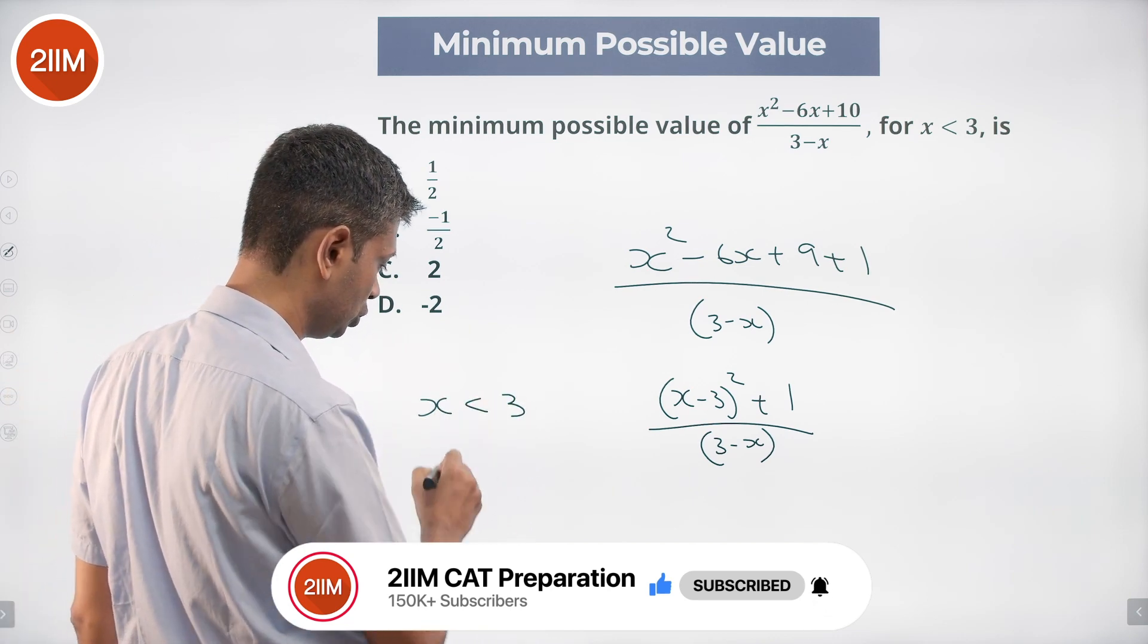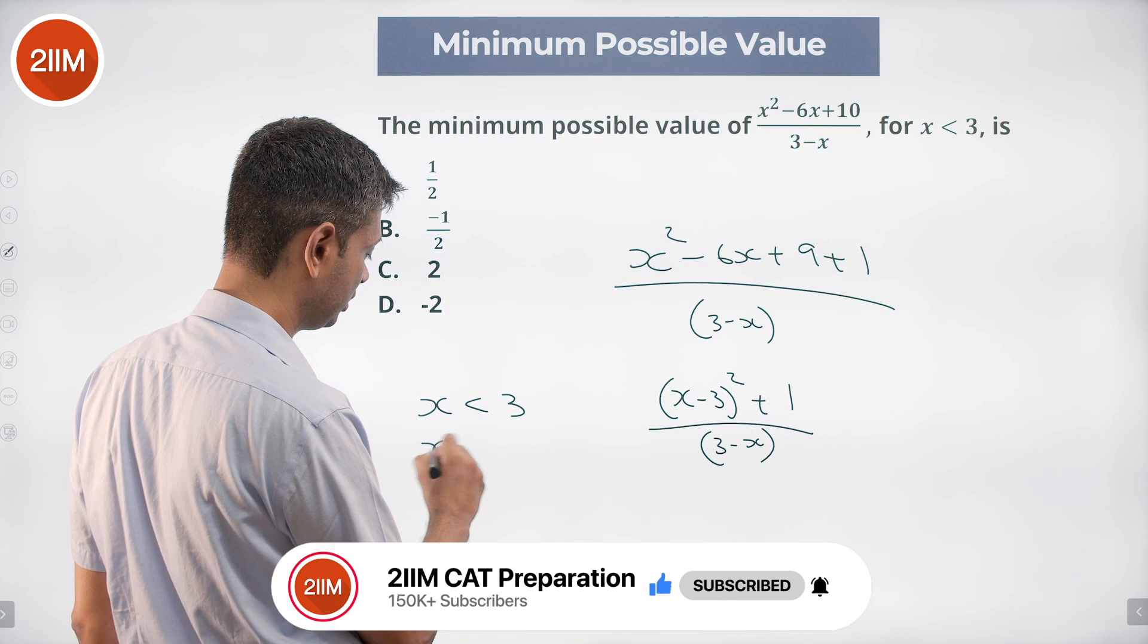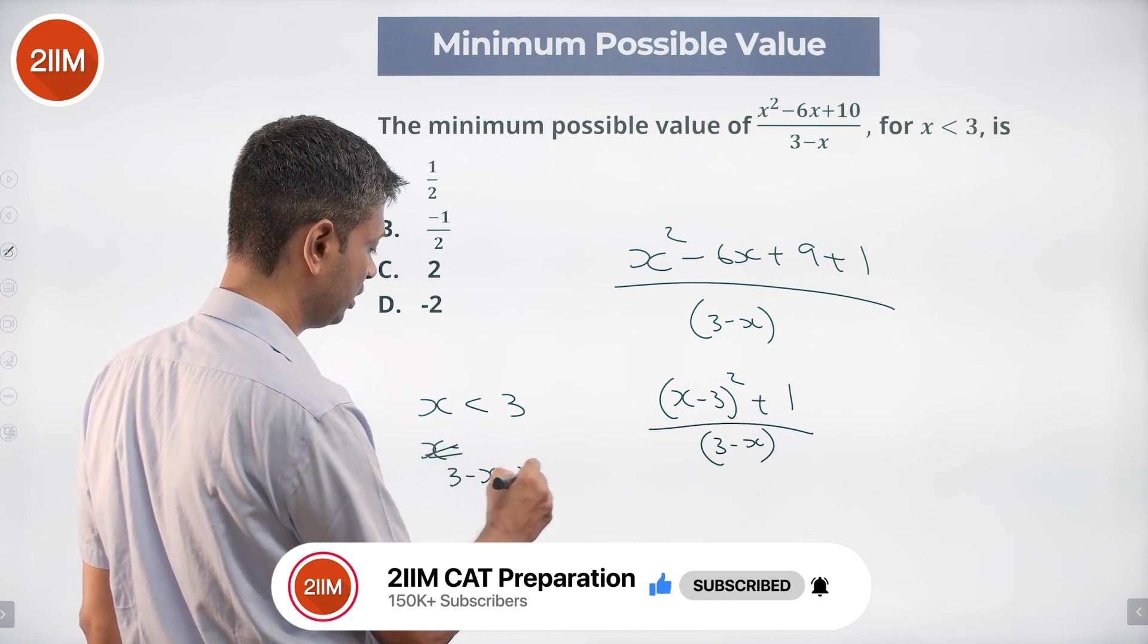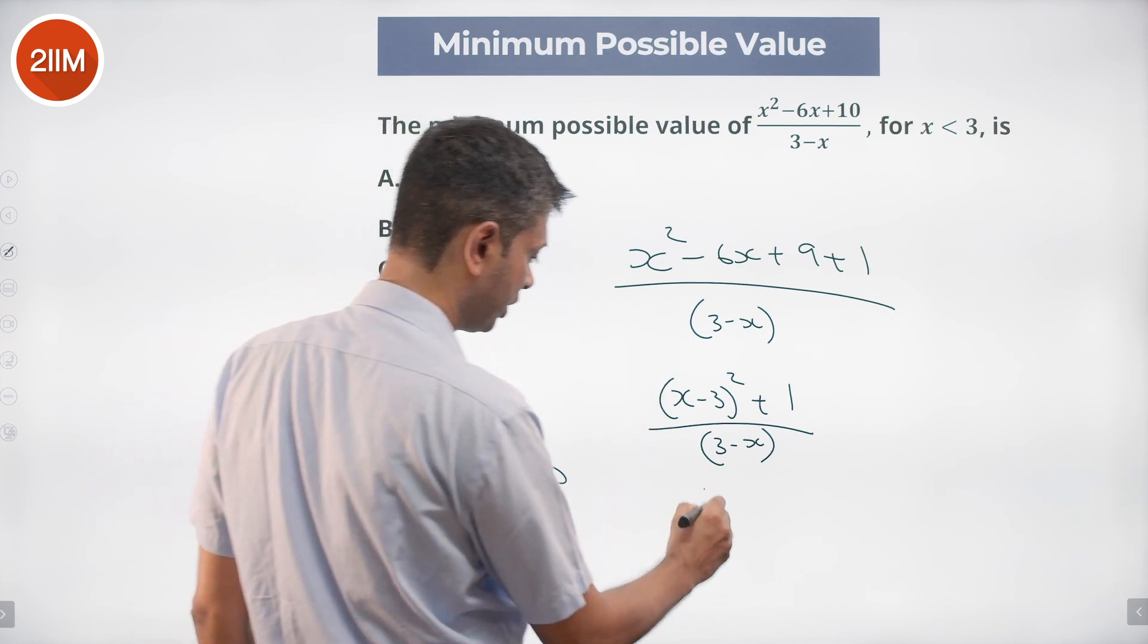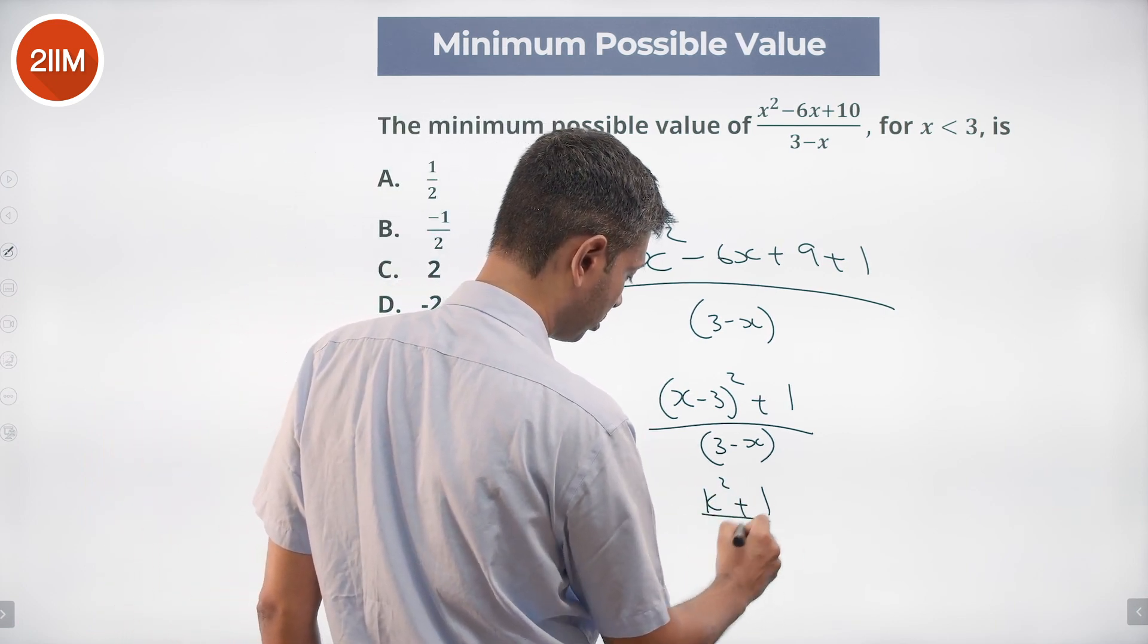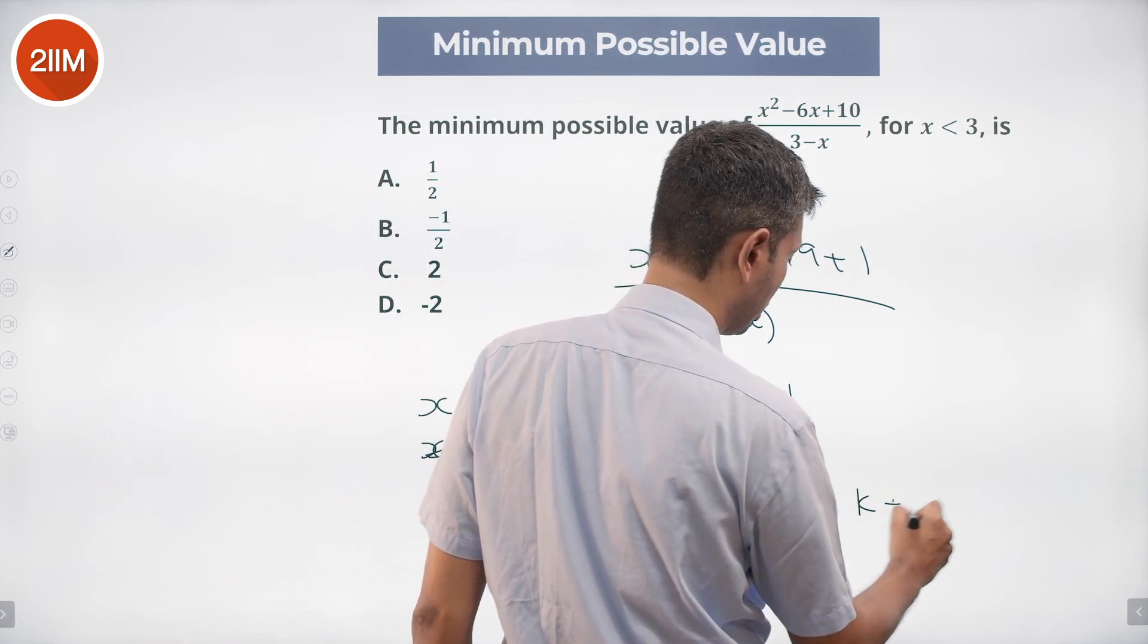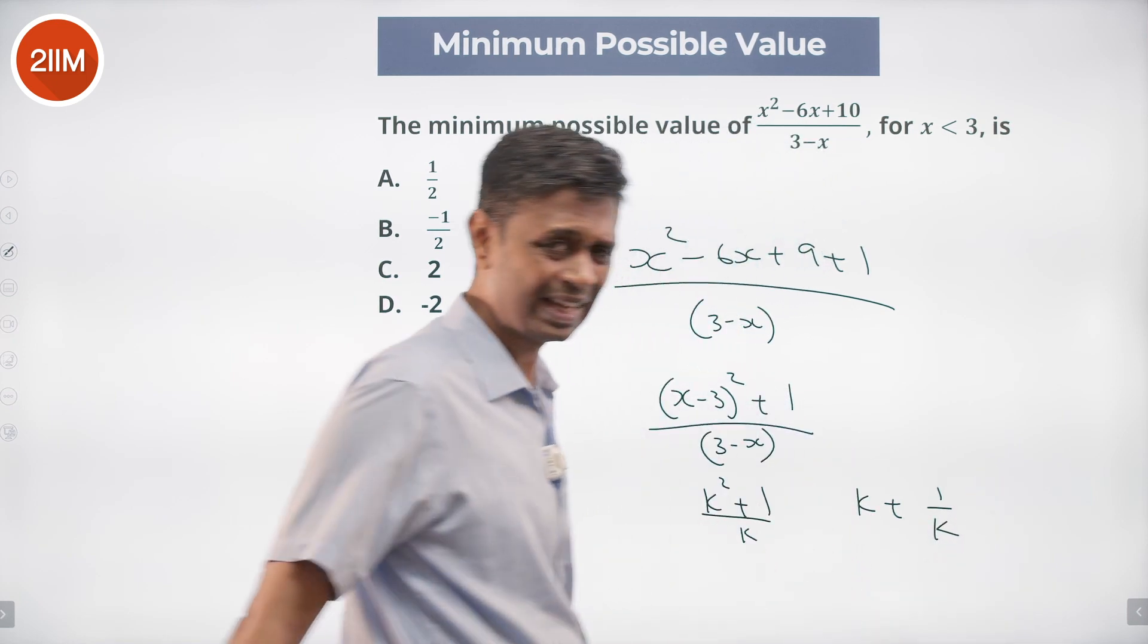than 3, so we can say 3 - x is greater than 0. We can say 3 - x equals k. This becomes k² + 1/k, or k + 1/k.